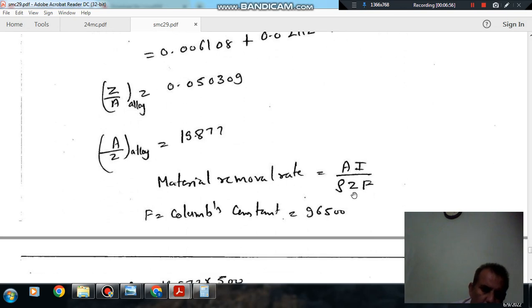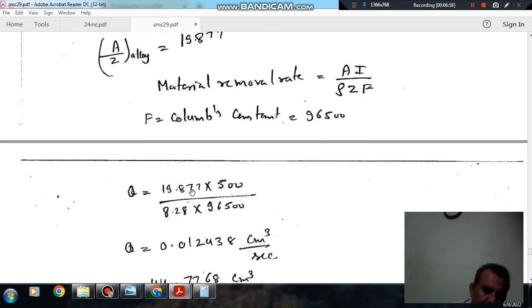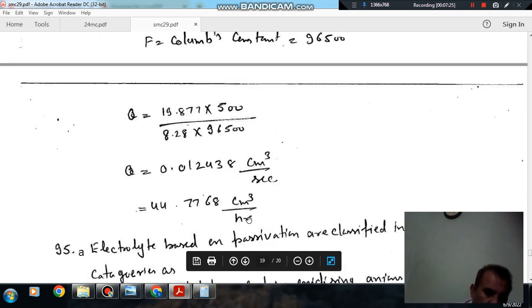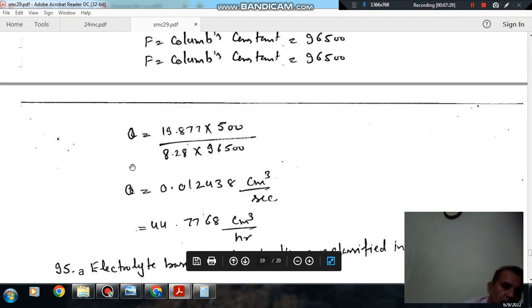Metal removal rate is given by A by Z times I by rho times F. Putting the value of A by Z that is 19.877, current is 500, density is 8.28, and F is 96540. From this we have material removal rate in cm3 per second is 0.0124, or in cm3 per hour it is 44.776. So that is the answer.